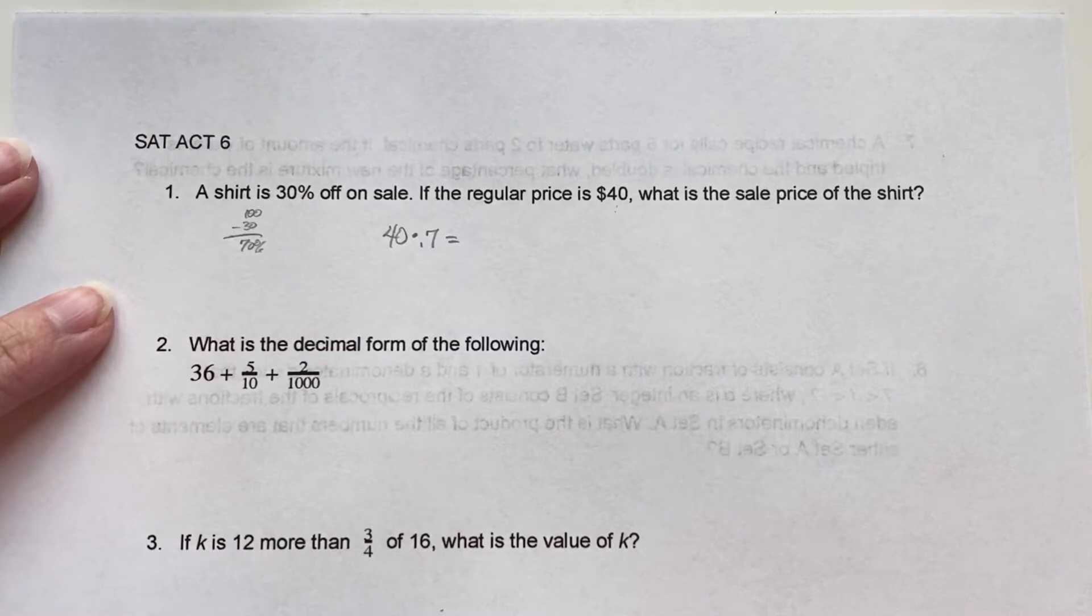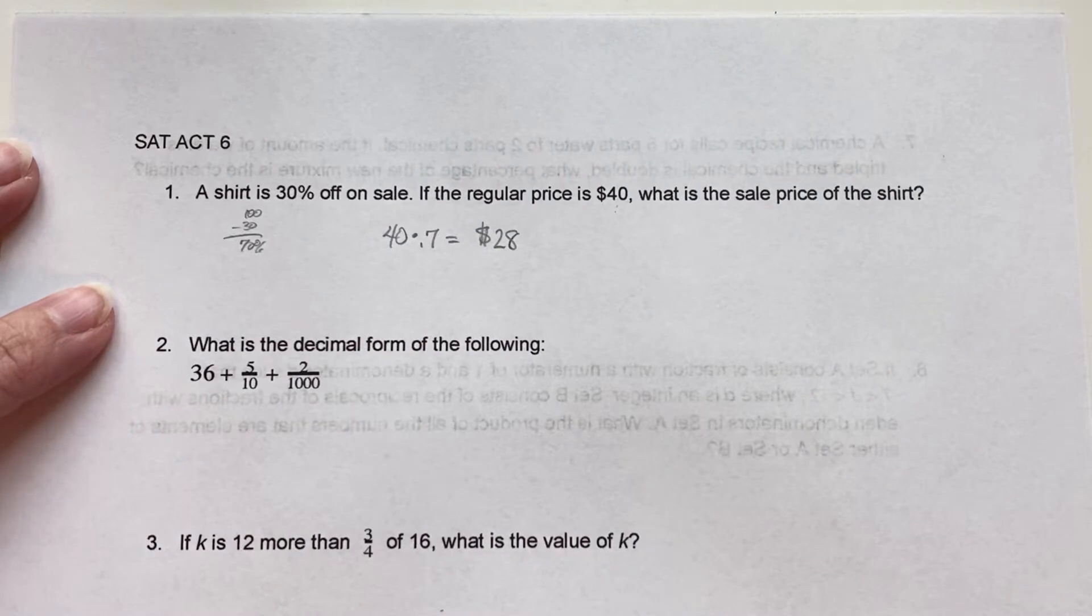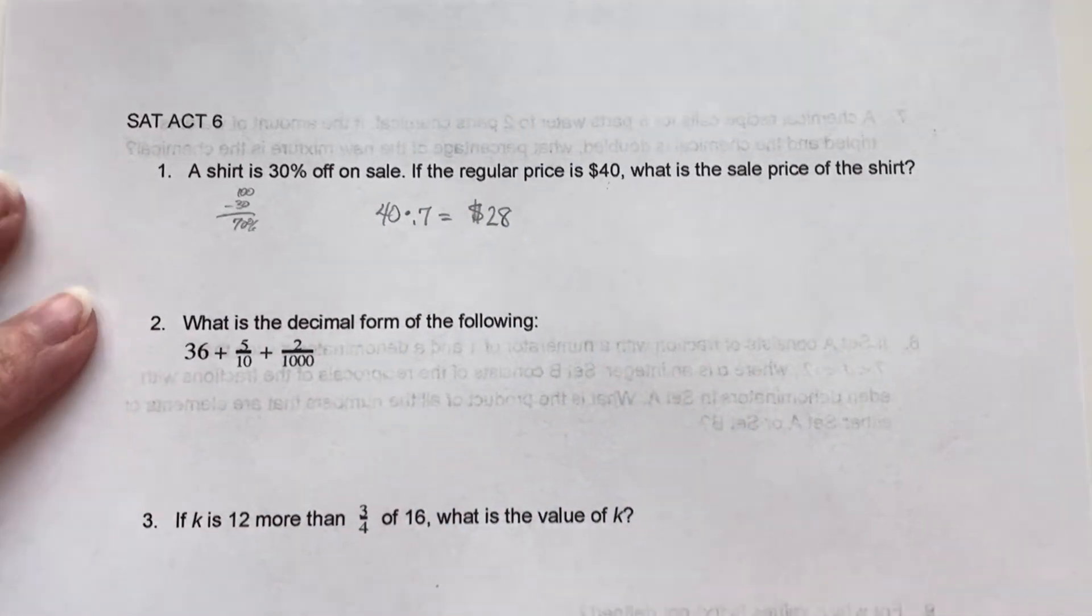So then I take 40 times 0.7 and that's the actual price you're going to pay for the shirt. So 40 times 0.7, 28. That's just shaving off one step and saving you some time.